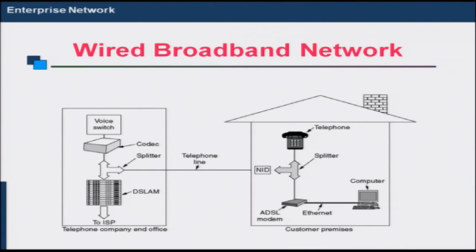In wired broadband, we use the telephone cables to provide connectivity — this is also called DSL broadband connectivity. In this setup, you have a DSL modem at your residence. The voice signal from your telephone and the data signal from your computer are multiplexed and sent on the telephone wire that comes to your home. At the telephone exchange, these two signals are separated: the voice signal is sent to the voice exchange and the data signal is sent to the internet. So using the same telephone wire and a DSL modem, you can get both voice and internet connectivity.